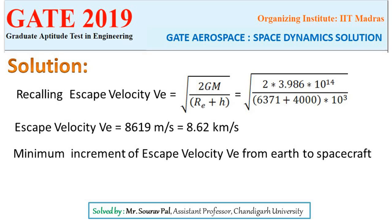As per the given question, we need to find the minimum increment of escape velocity from the Earth to the spacecraft at an altitude of 4,000 km. So we need a change of velocity. We know that escape velocity at the Earth's surface is 11.2 km/s, and at the altitude it is 8.62 km/s, which we have just found.